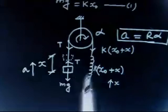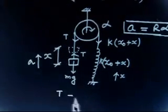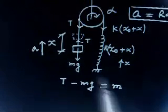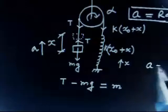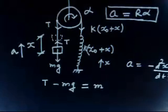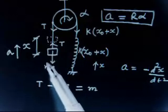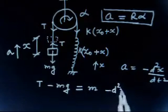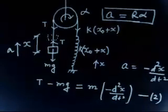Now writing the upward force equation for the block: T minus Mg equals mass times acceleration. Mass is M, and acceleration A can be written as minus d²x/dt², because we displaced x in the downward direction but the acceleration is in the negative x direction. So: T minus Mg equals minus M times d²x/dt². This is equation number 2.